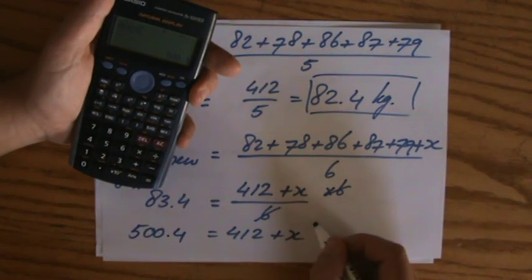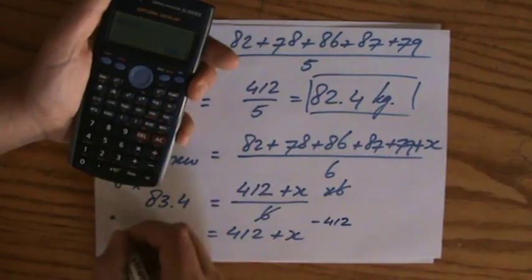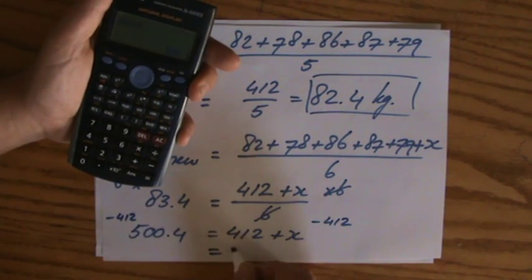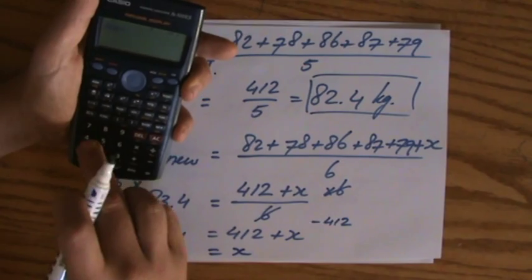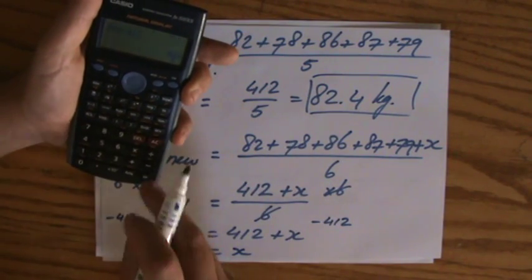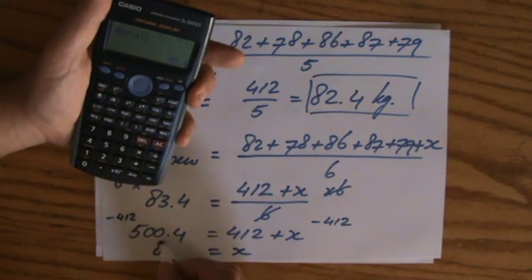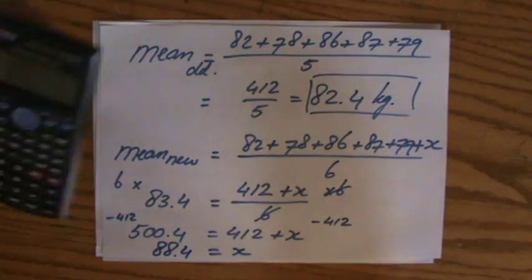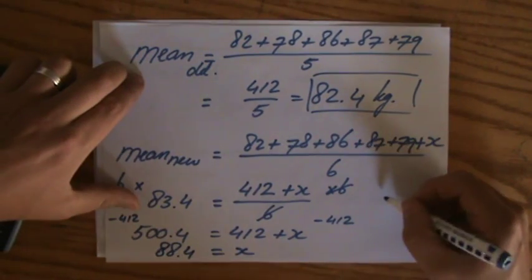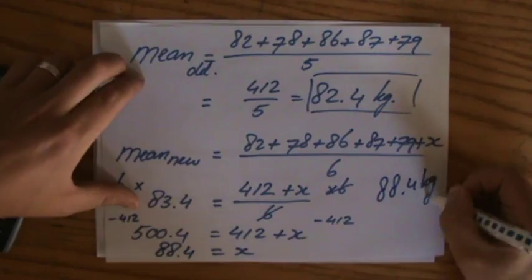And if I take away 412 on both sides, I say that x equals 88.4. So this guy is 88.4 kilograms.